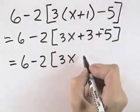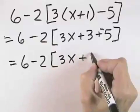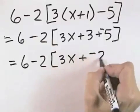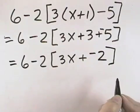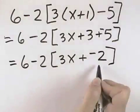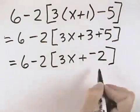3 plus negative 5 is, you take the difference between them, which is 2, but because the 5 has the larger absolute value, it will be plus a negative 2. Now we're ready to look outside our square brackets because these are not like terms, so we cannot simplify inside the brackets any further.